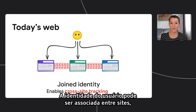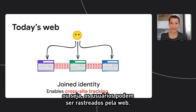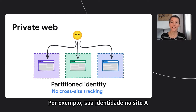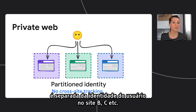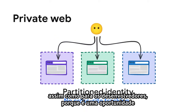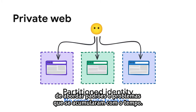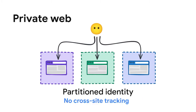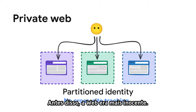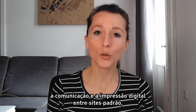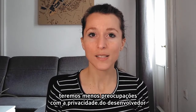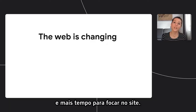Today, user identity can be joined across sites, which means users can be tracked across the web. To address this, the goal is to partition identity across sites — your identity on site A is separate from your identity on site B, C, and so on. This is good for web users and for us as developers, because it's an opportunity to address patterns and problems that have built up over the years. If we fix cross-site communication and fingerprinting, that means fewer privacy concerns, which means more time to focus on your site.